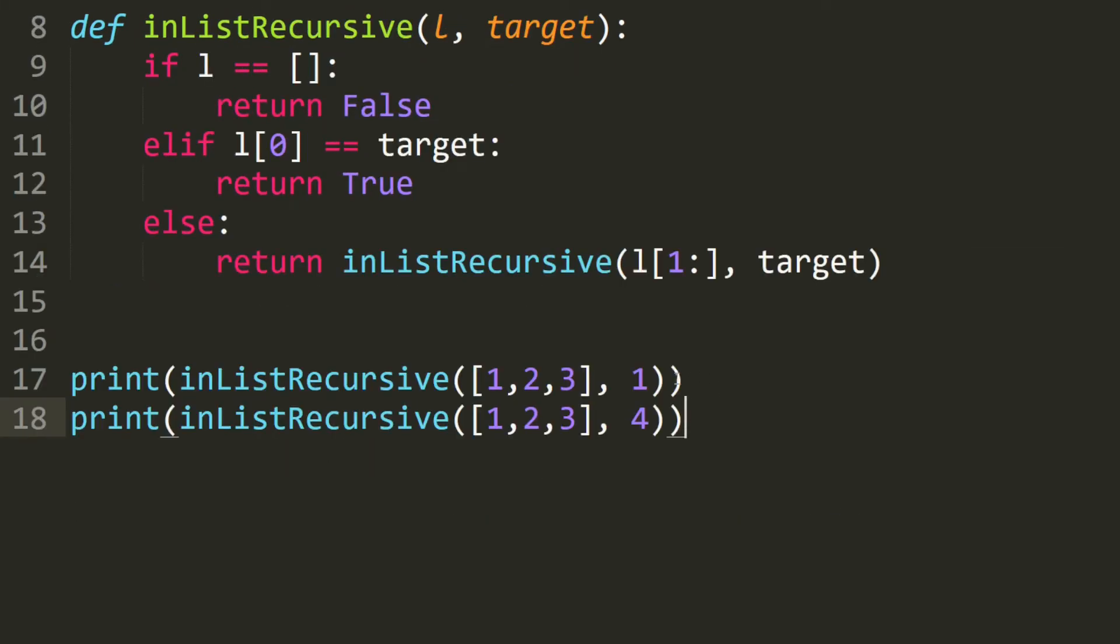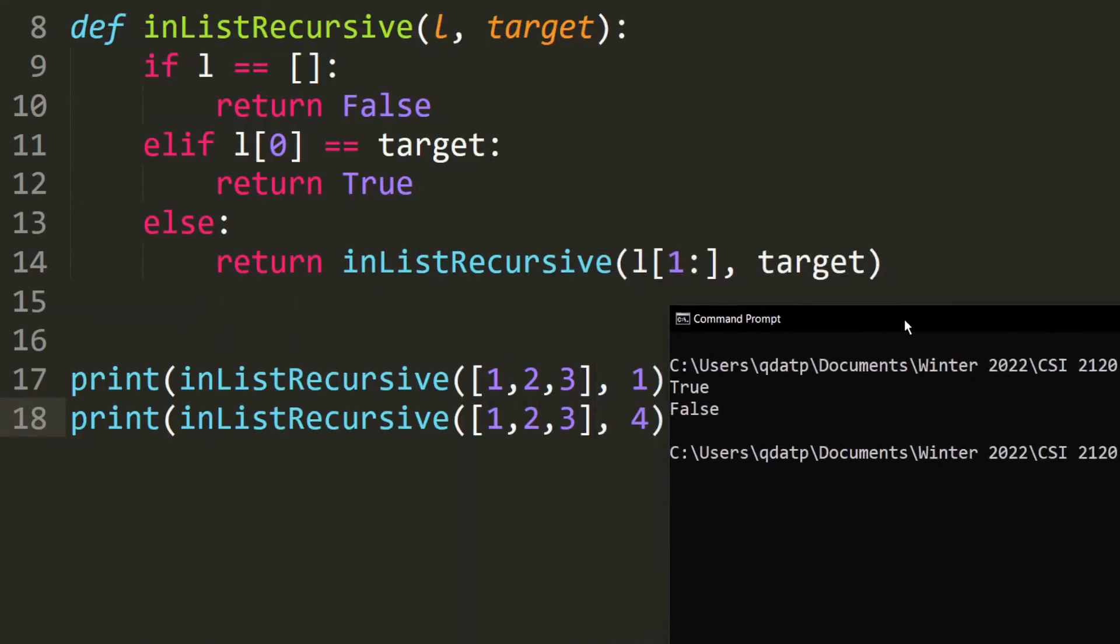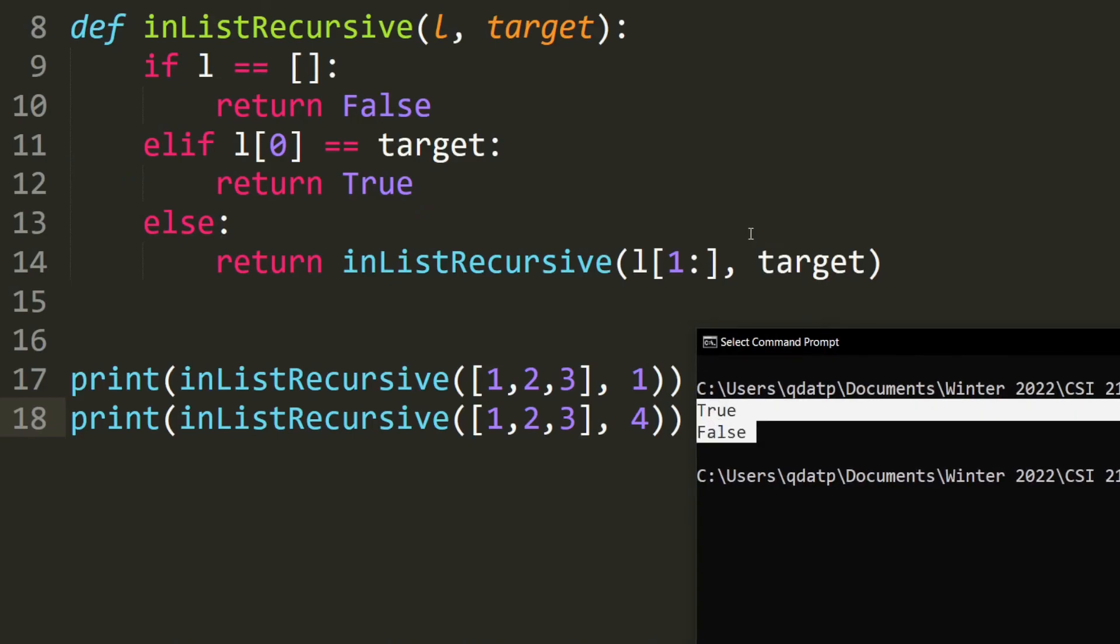And finally, we test it. So the first one should return true and the second one should return false. And as you can see, it is the case. So it means that our code is correct.